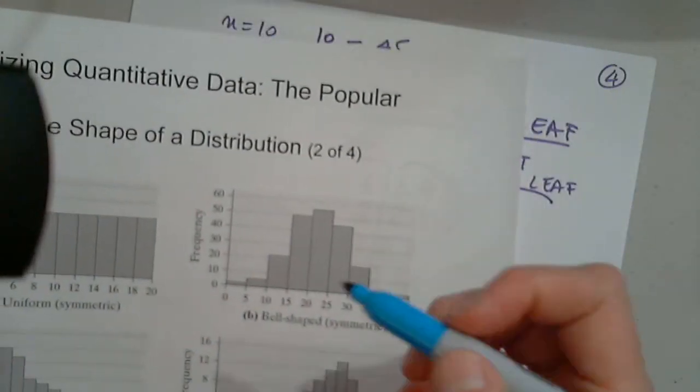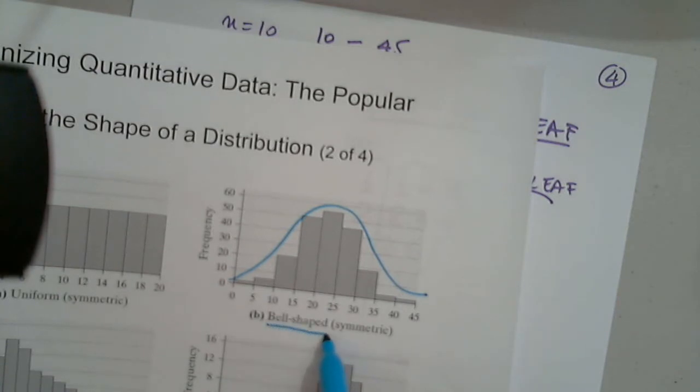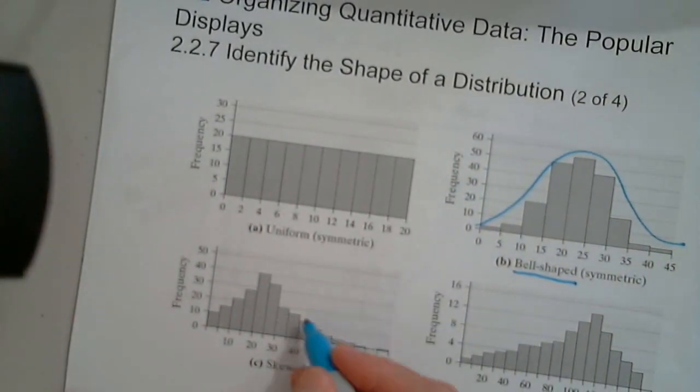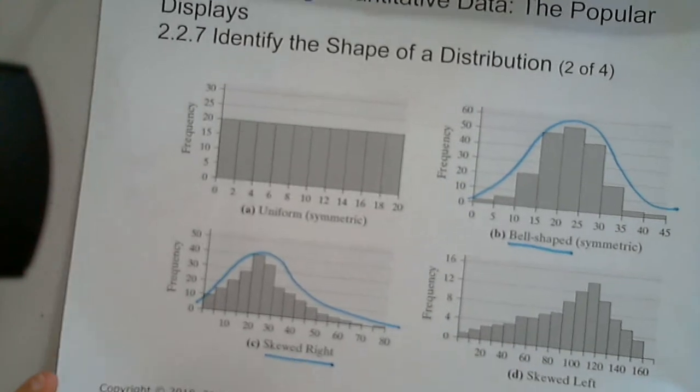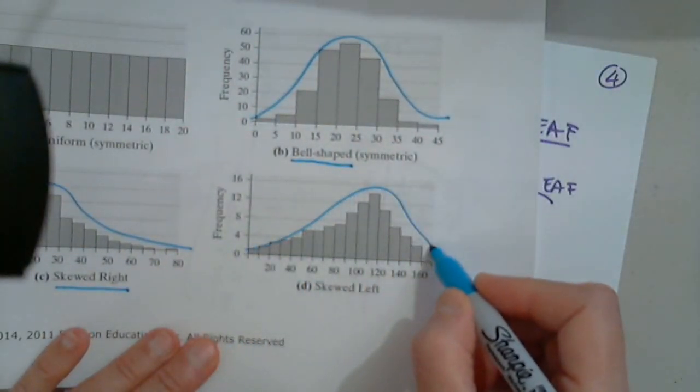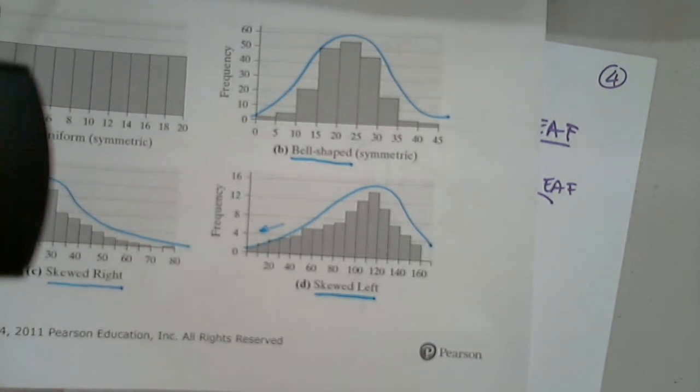This is something that we like to call bell-shaped. Bell-shaped distribution. You will see how important this is in the rest of the course. This one obviously has a long tail to the right. So it's skewed right. And the last one, same thing, but skewed to the left. So the left is longer than the right. So that's why it's called skewed left. So these are the distributions.